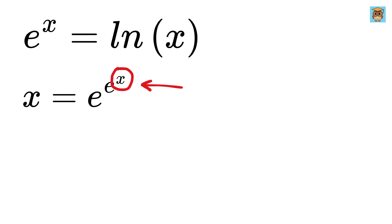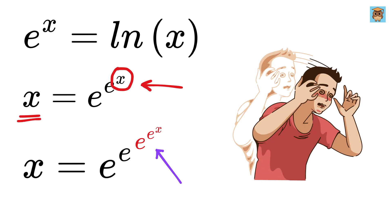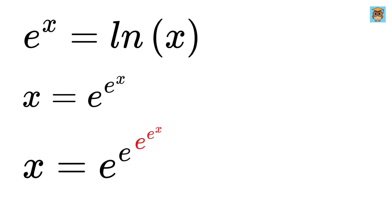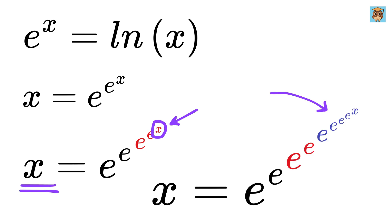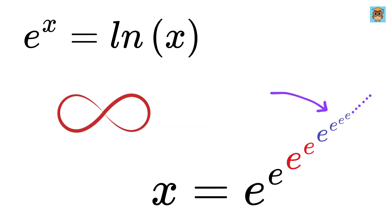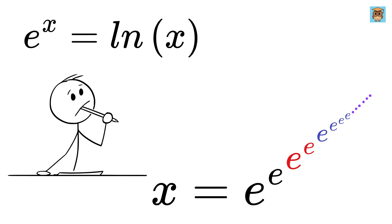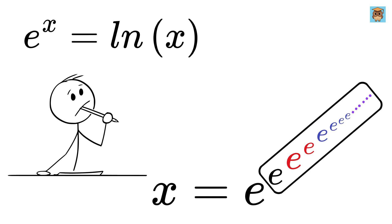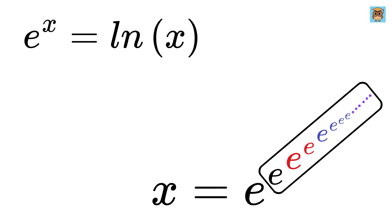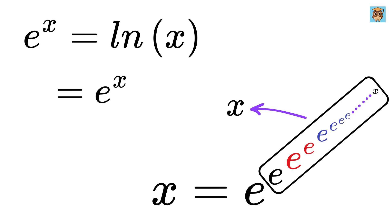Now look here. We can write this x as e to the e to the x, and then write that x again as e to the e to the x, and so on. We can see an infinite pattern here. This thing is equal to e to the e to the e, and so on till infinity, and then we have x. Thus, we can call it x. Therefore, the equation reduces to e to the x equals x.